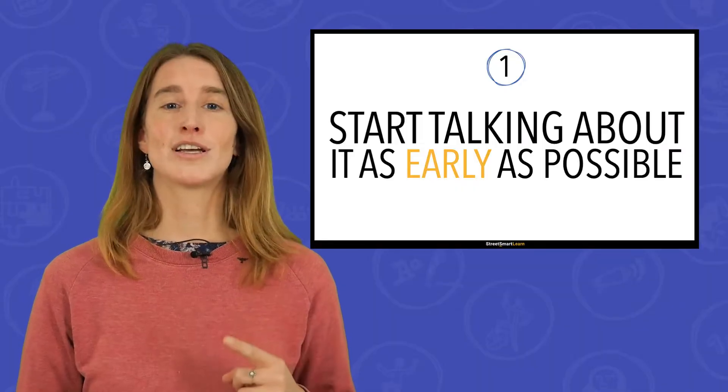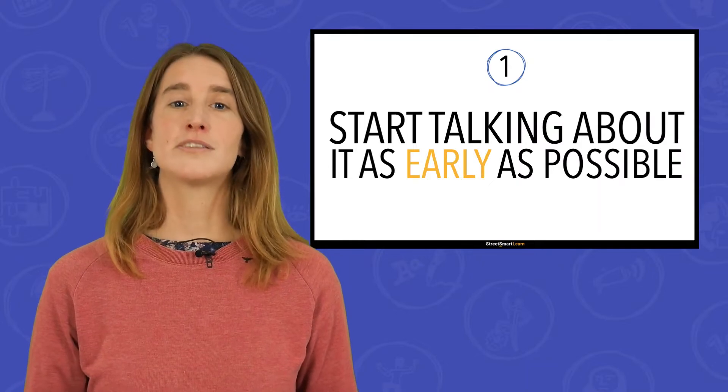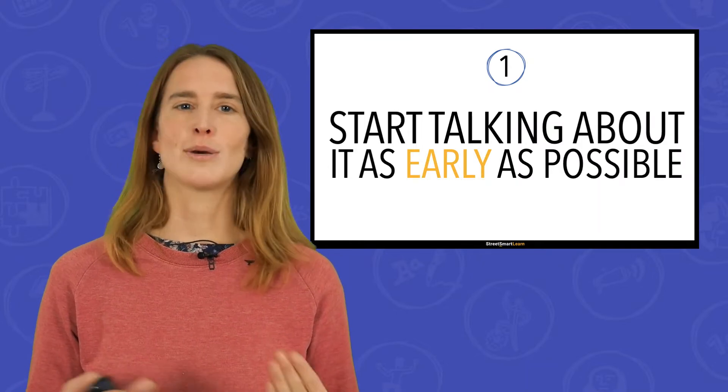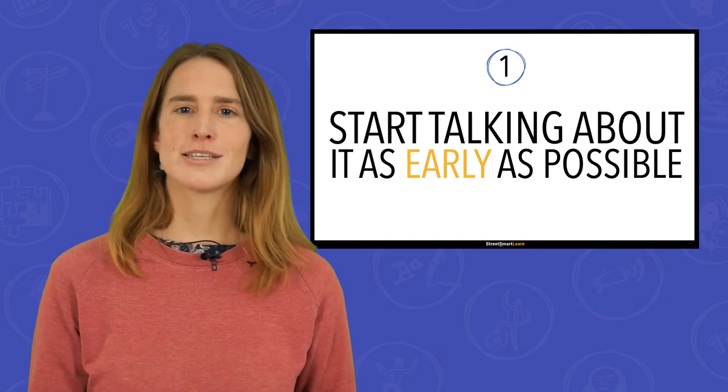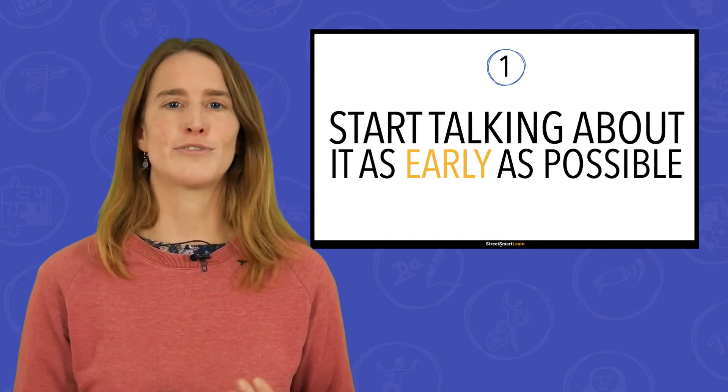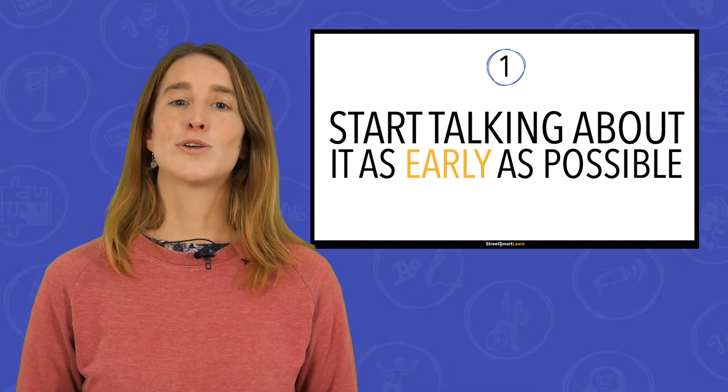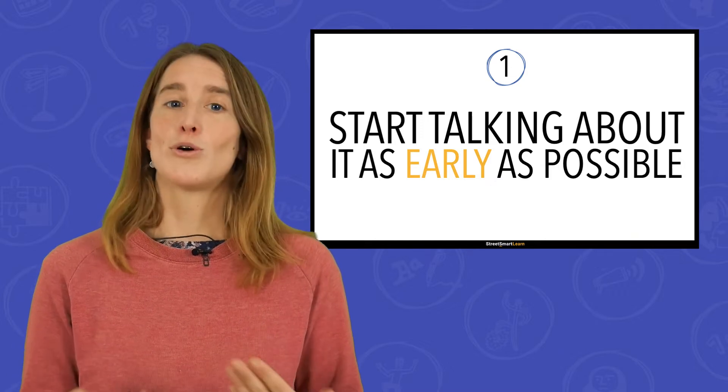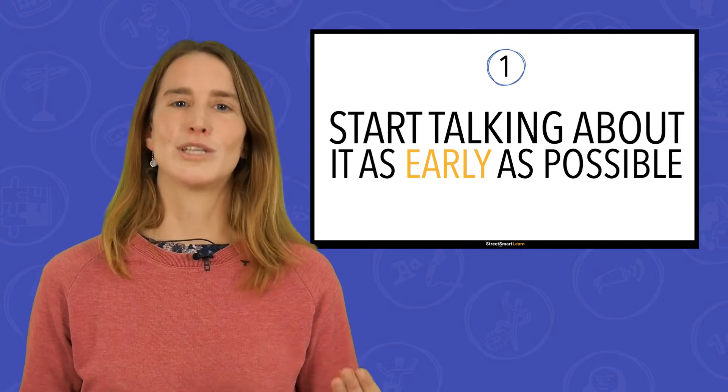Tip 1: Start talking about it as early as possible. This is a general tip when it comes to talking about sex and sexuality. From the moment children are born, they are curious about their bodies and how their bodies and the bodies of others develop. Use that curiosity to your advantage. The sooner you start talking about it, the more normal it will feel, which is crucial if you want children and youth to openly talk about it.